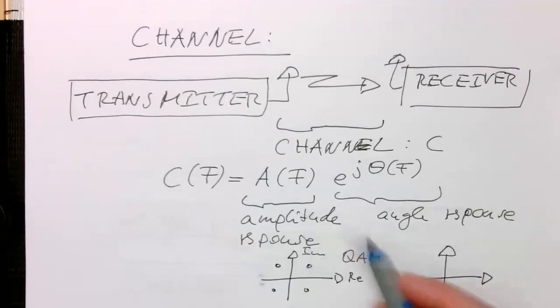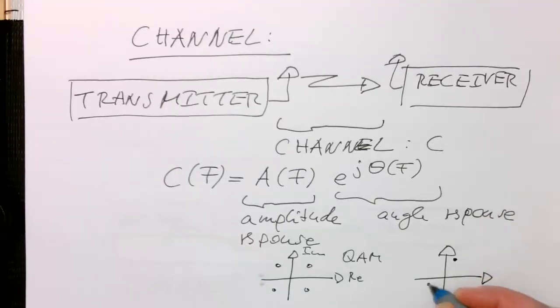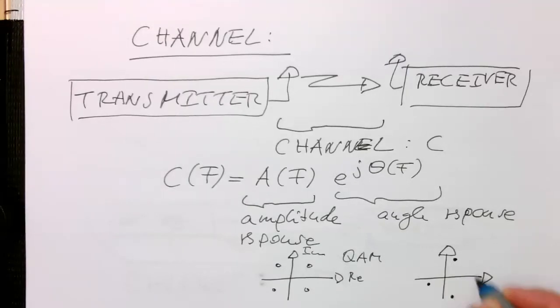And because of the amplitude response, also turned into different levels. So imagine our pattern or constellation looks like that.